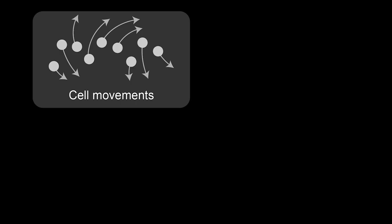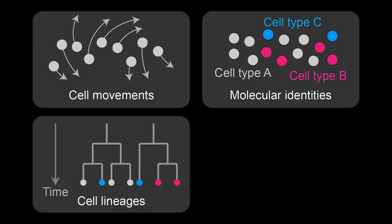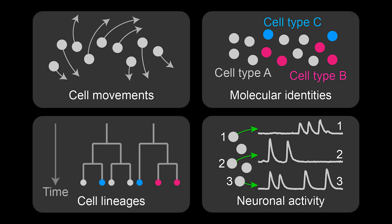In this study we overcome this limitation and present an imaging method that simultaneously tracks cell movements, molecular signatures of different cell types, cell lineage relationships, as well as the neuronal activity of single cells throughout an entire developing circuit.